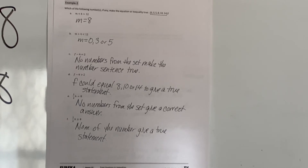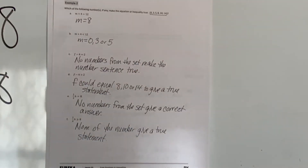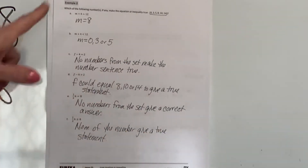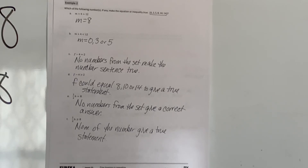So looking at equalities and inequalities: when there's an equal sign there will be one correct answer. If there's a greater than, less than, greater than or equal to, or less than or equal to sign — those are called inequalities — there could be multiple answers that are true. Given a set of numbers, sometimes none of the answers will give you a true statement. Tonight I want you to do a practice exercise for inequalities, and tomorrow we'll check those together. If you have any questions, email or send me a text on Remind. Keep watching, stay curious, and always keep learning!